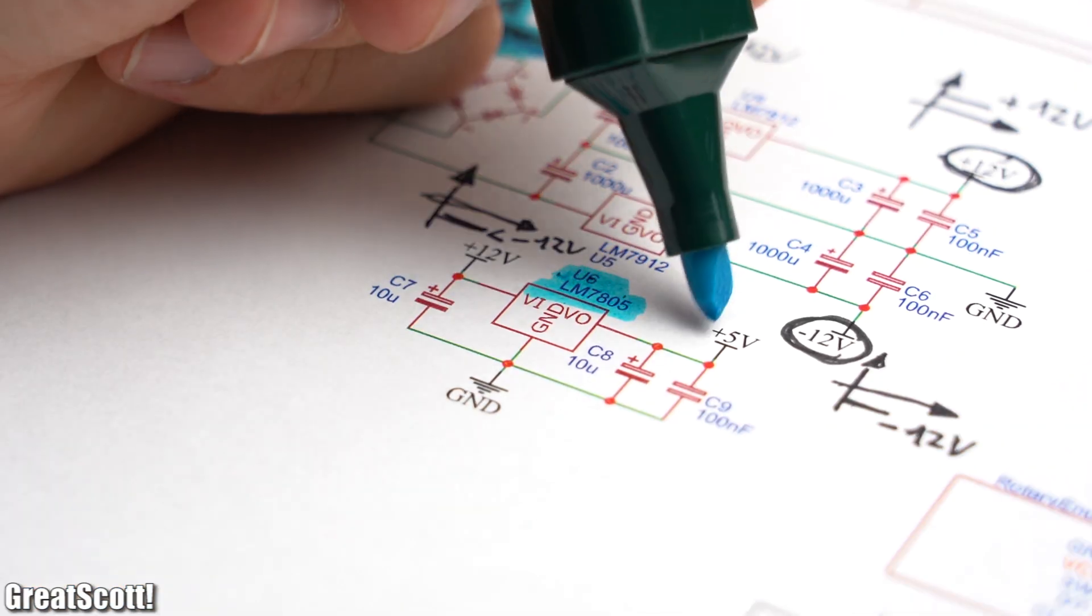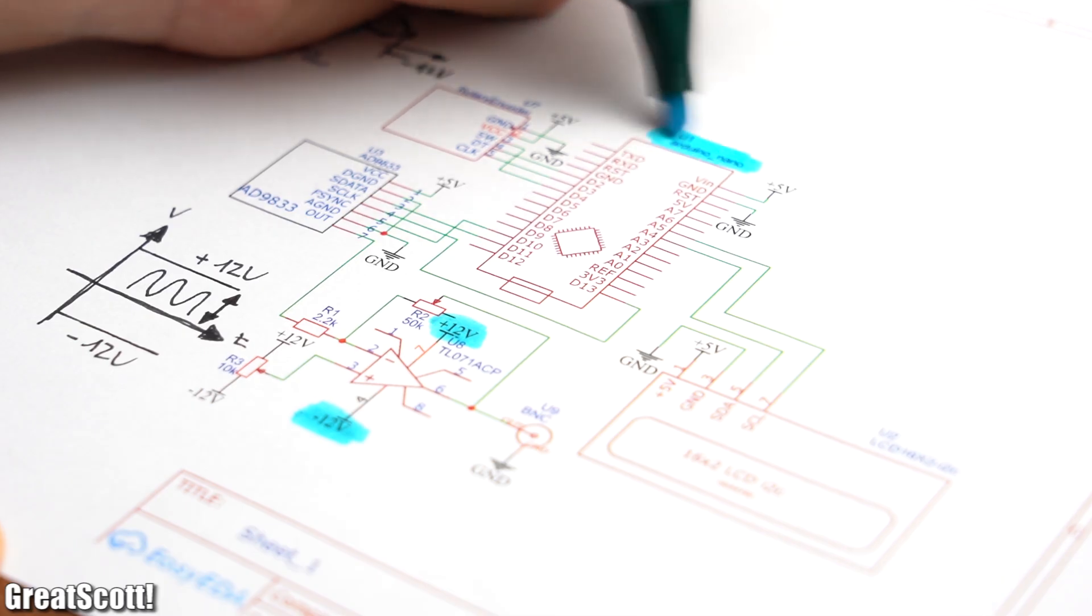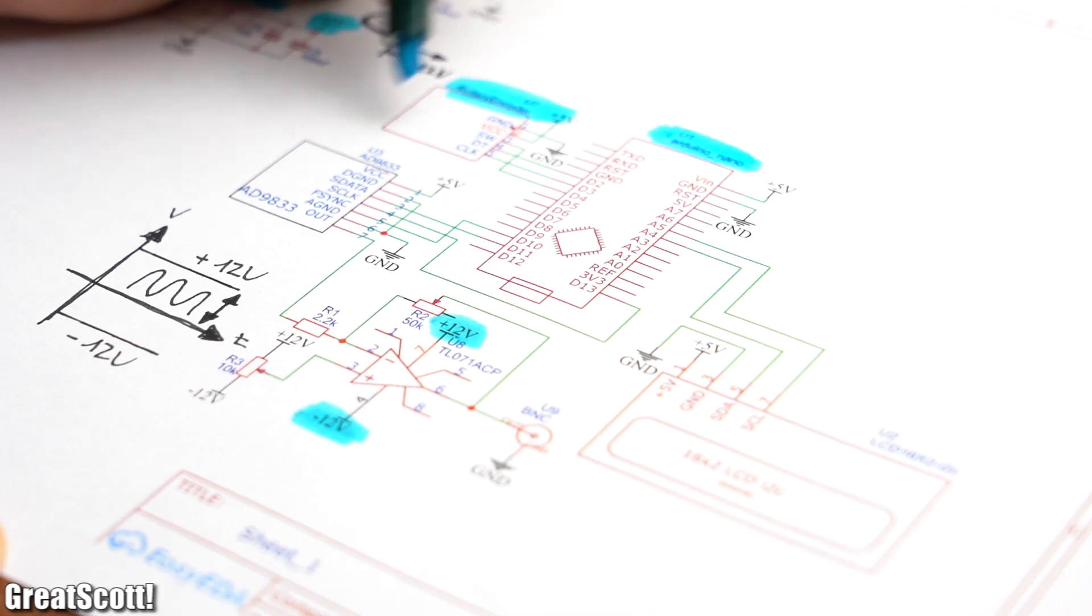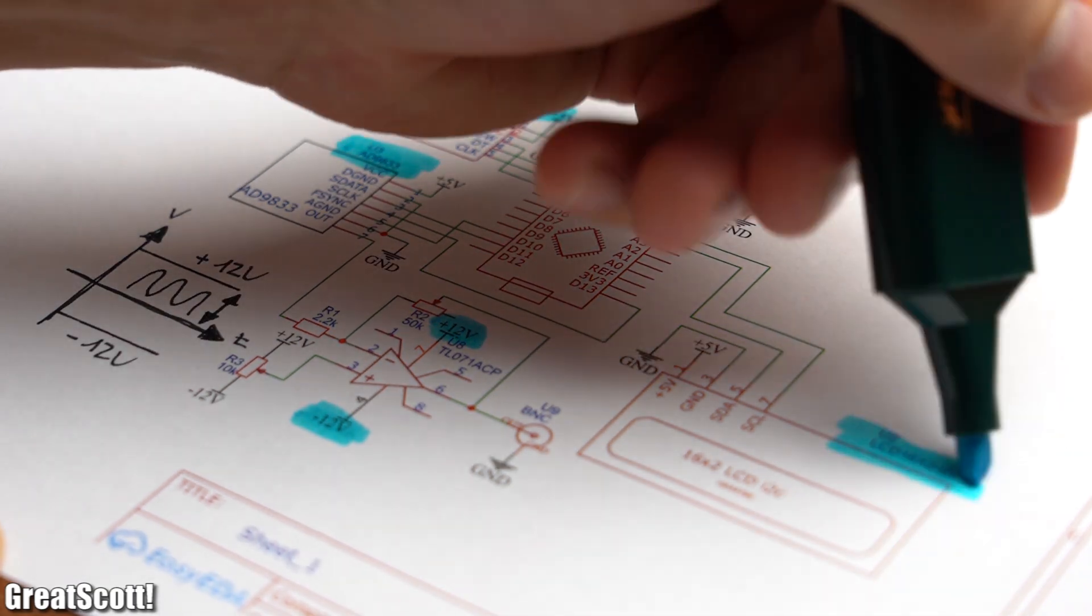Of course, we also got a 5 volt regulator to power the Arduino, rotary encoder, AD9833 IC and LCD.